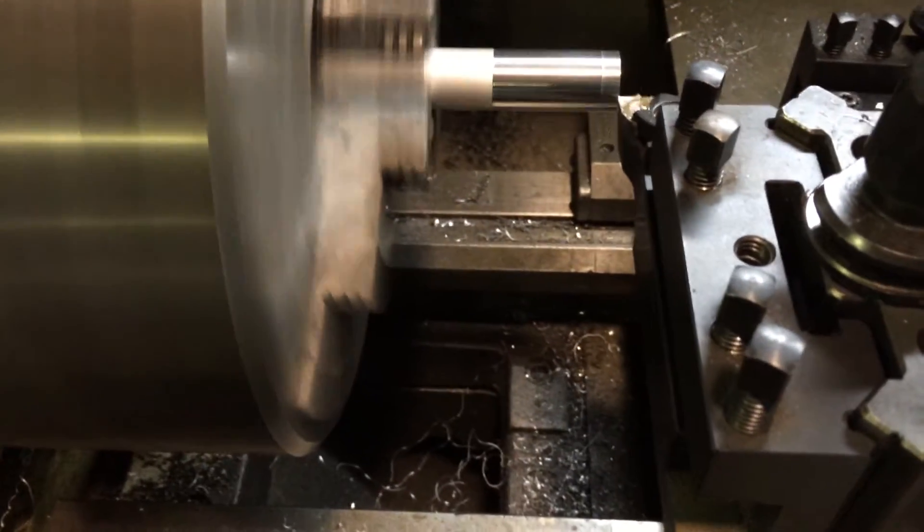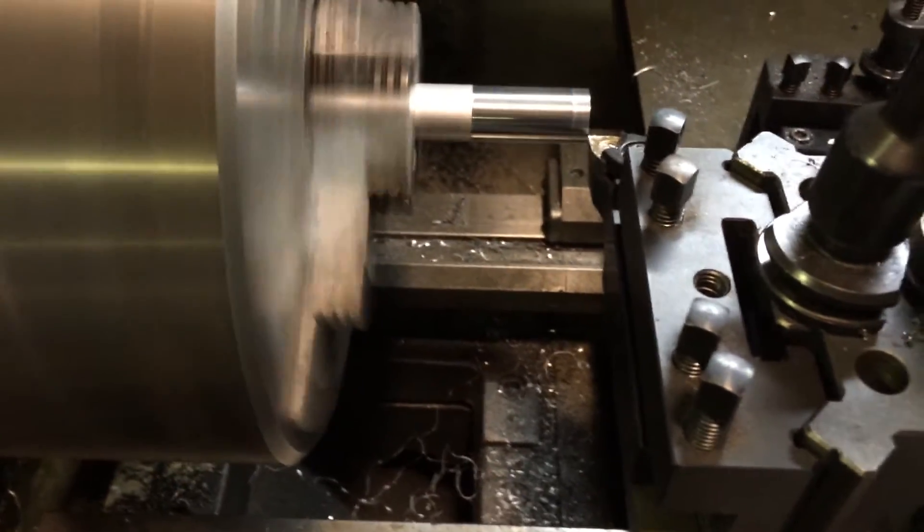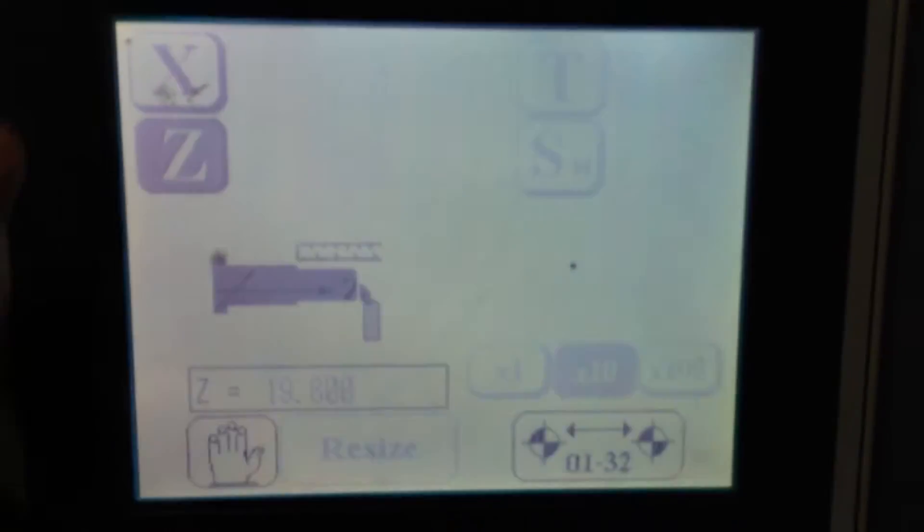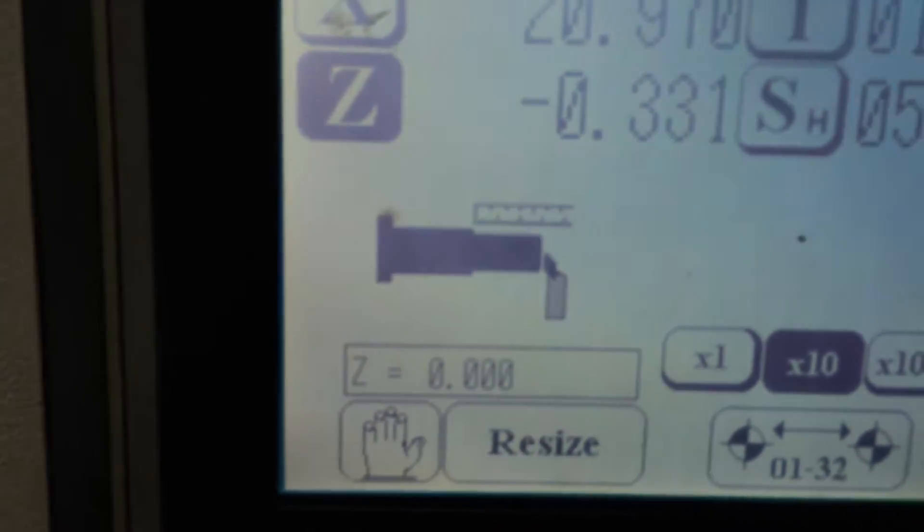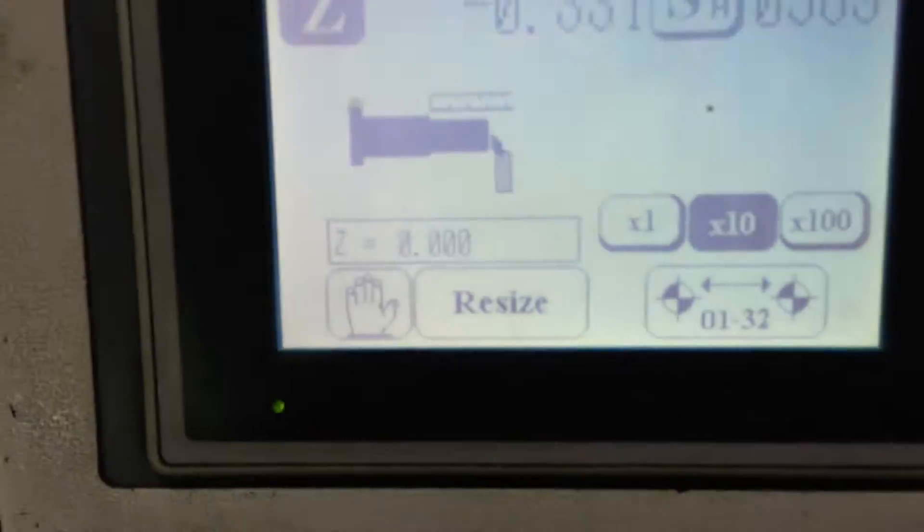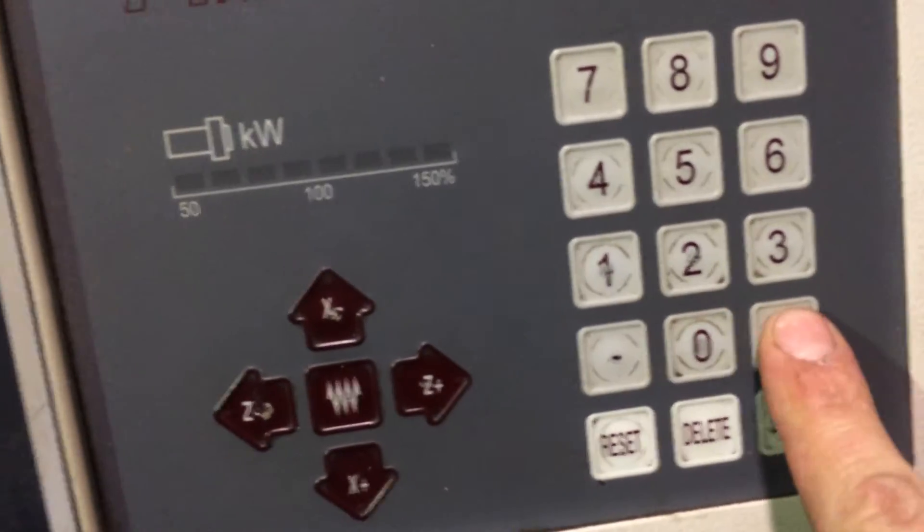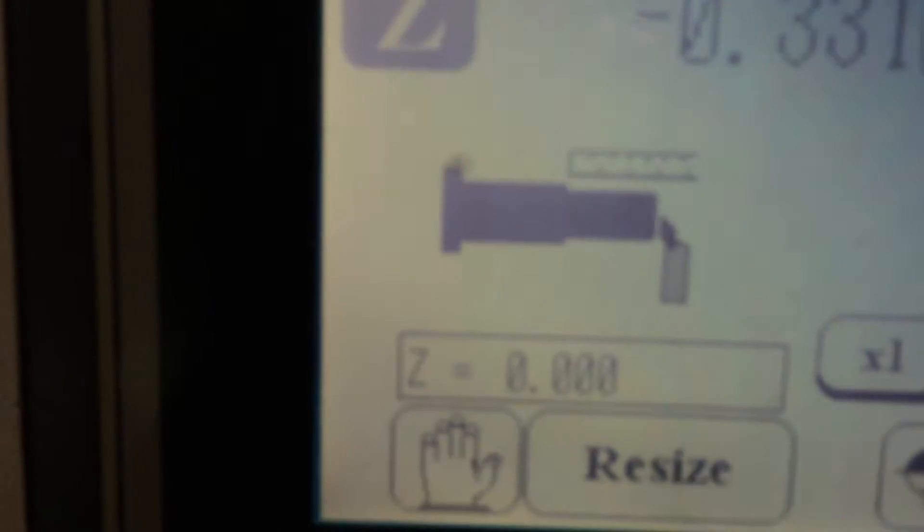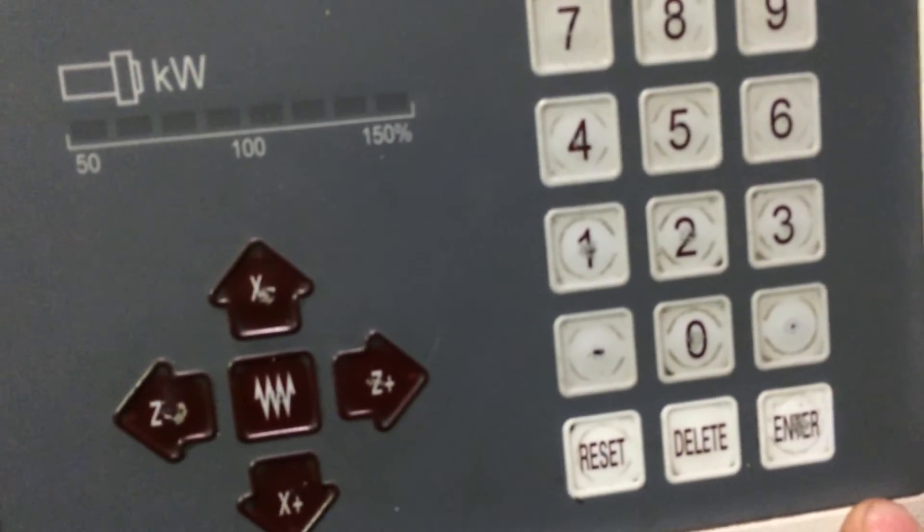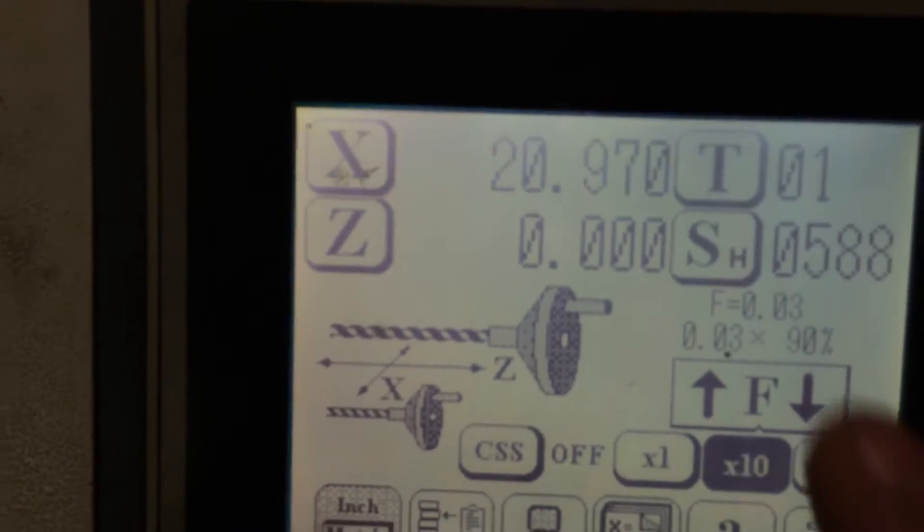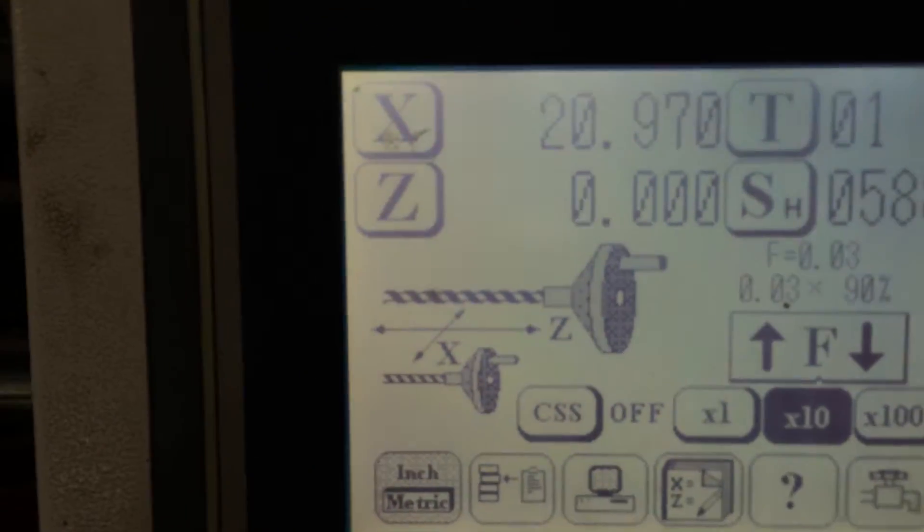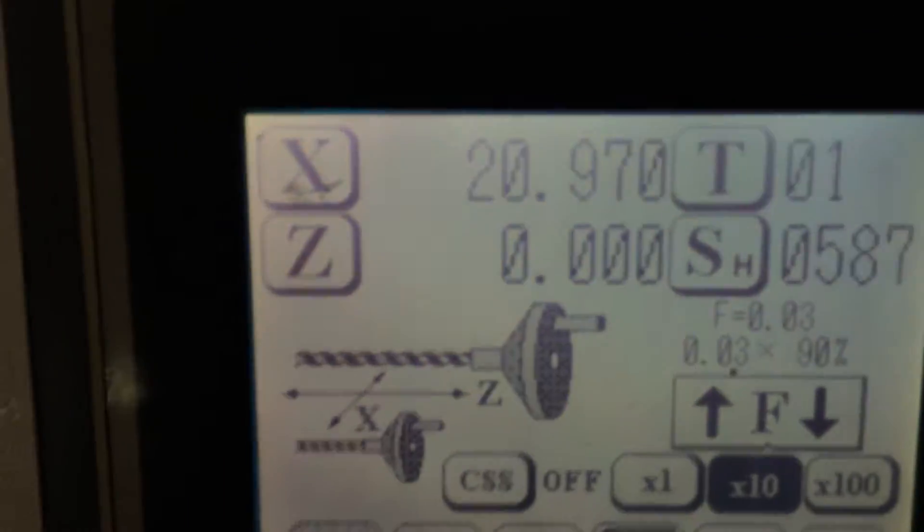So that's basically - we can set that as our Z axis zero. It's telling us to face off or measure to the end. 0.0 and enter. And our Z is now 0. So our X and Z is ready to go.